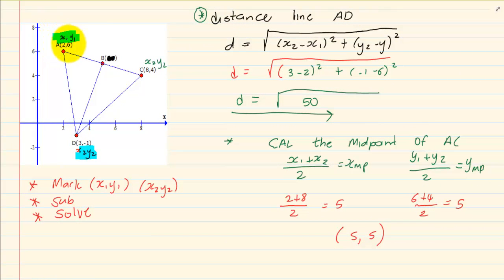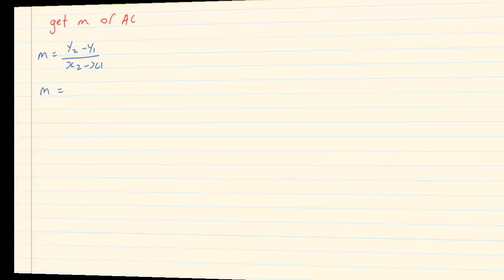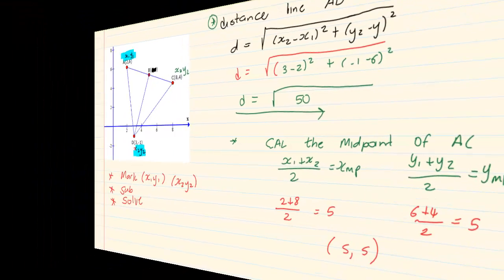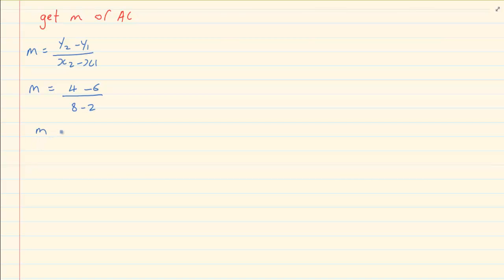Using the same drawing, the next question would be get the M of AC. The coordinates of A is 2 and 6 and C is 8 and 4. We have already marked it. Since we are working with gradient, we know it is going to be y2 minus y1 over x2 minus x1. Which will give us 4 minus 6, 4 minus 6 over, then we have 8 minus 2. So our gradient is equal to minus 2 over 6 which is equal to minus 1 over 3.